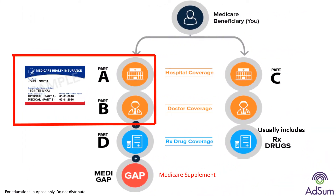After getting Original Medicare, you have two options for additional coverage. Option 1 is the Medicare Supplement option — you can choose Original Medicare Parts A and B and add Medicare Supplement and a standalone prescription drug plan. Option 2 is the Medicare Advantage plan or Part C. Medicare Advantage plans combine Part A and Part B coverage; many also include prescription drug coverage, Part D, and offer additional benefits. Medicare Advantage plans are offered by Medicare-approved private insurance companies.